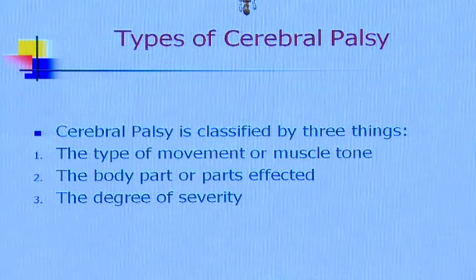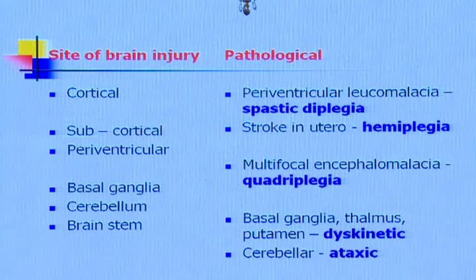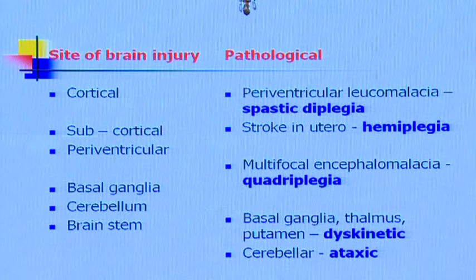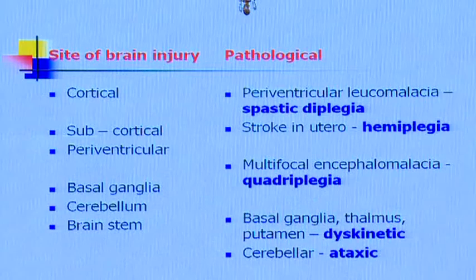There are different types of cerebral palsy depending on the type of movement disorder, the part of the body affected, and the degree of severity. Depending on the site of injury to the brain, you have different clinical manifestations. For example, basal ganglion involvement tends to produce dyskinetic cerebral palsy; cerebellar involvement leads to ataxic cerebral palsy, and so on.